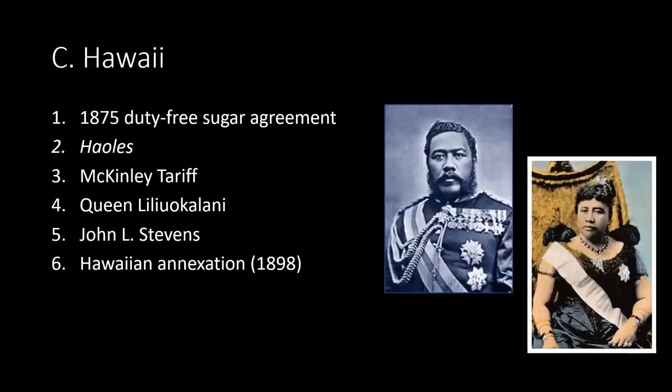They declared a republic in 1894 with Sanford B. Dole as the first president. The new government requested territorial status and annexation by the United States. President Grover Cleveland refused, having found that a majority of Native Hawaiians opposed annexation and not wishing to reward the dishonorable actions of the planters. President William McKinley had no such concerns and secured ratification of the annexation treaty in 1898, despite protests by Native Hawaiians. As other imperial powers looked on, the United States abandoned its traditional principles to rush headlong into world affairs.